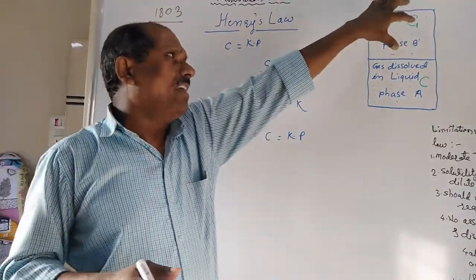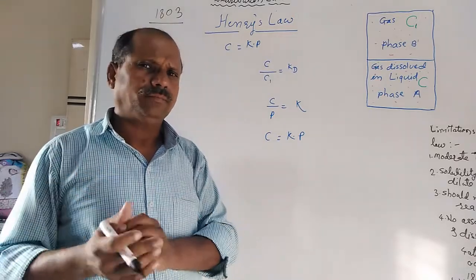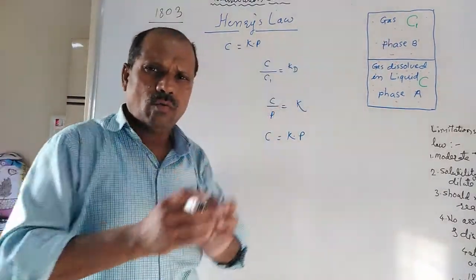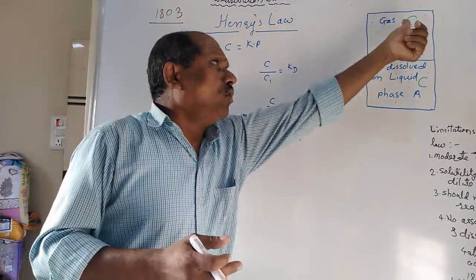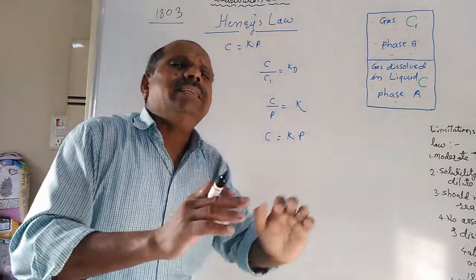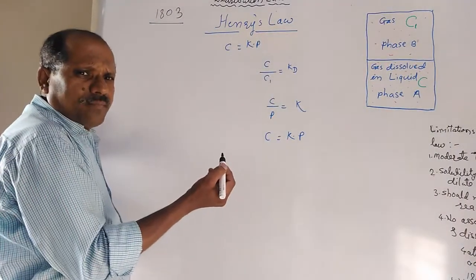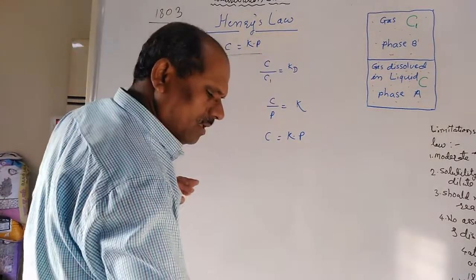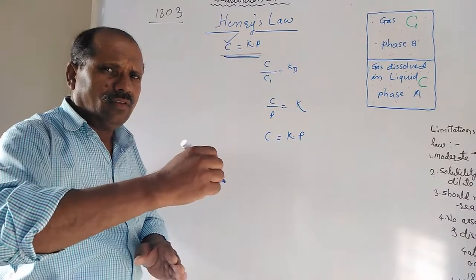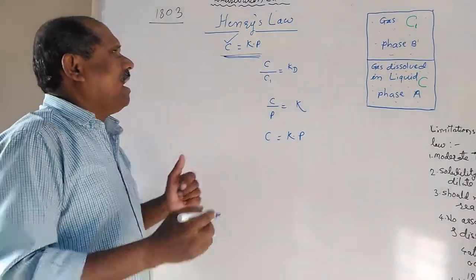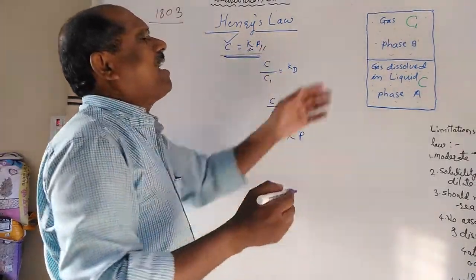Whenever the gas pressure is more, more gas will be distributed into the liquid. Whenever the gas pressure is low, the solubility of the gas in the liquid will be low. The solubility of the gas in the liquid is directly proportional to the pressure of the gas. Henry's law is mathematically expressed as C = Kp, where C is the concentration or solubility of the gas in the liquid, K is the proportionality constant called Henry's constant, and P is the pressure of the gas in phase B.